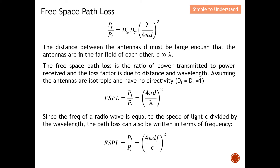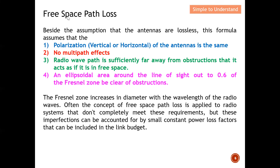With the isotropic assumption, DT and DR are both equal to one, giving us the FSPL as the inverse of PR/PT. Since frequency f equals the speed of light c divided by wavelength λ, we can rewrite the equation replacing λ with c/f. For lossless antennas, the formula must also meet four assumptions. The first is polarization: both the transmit and receive antennas must have the same polarization — whether vertical or horizontal. For example, if the transmitting antenna is vertical polarization, the receiving antenna must also be vertical.